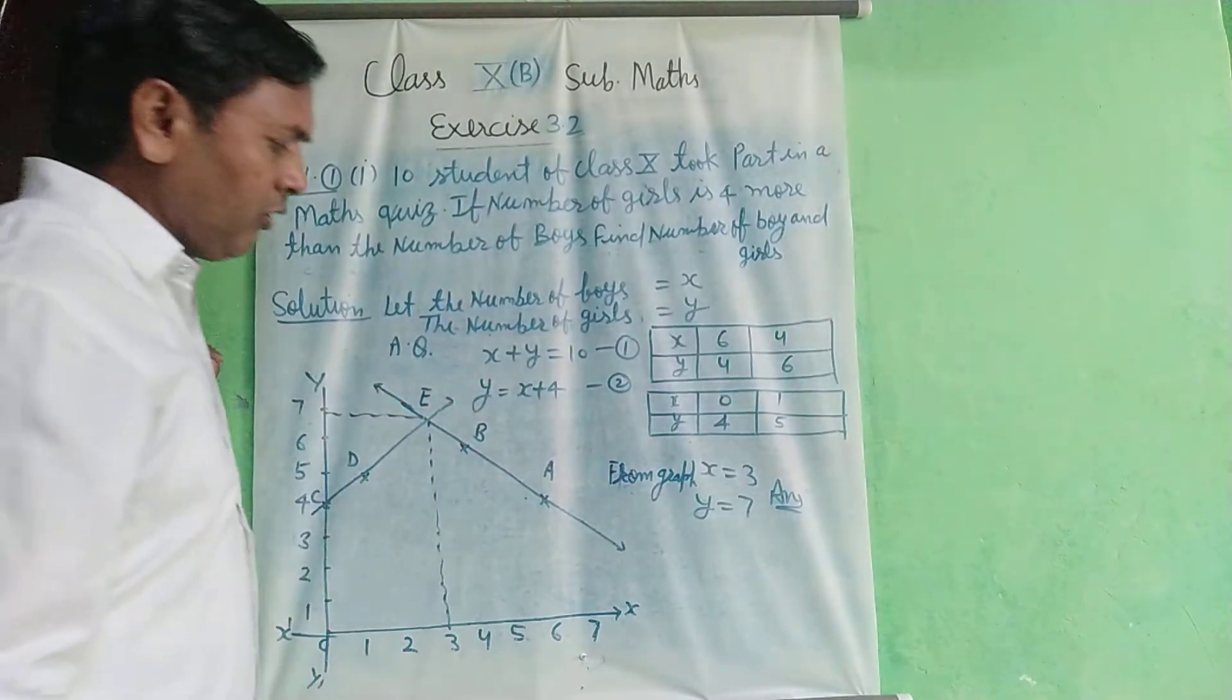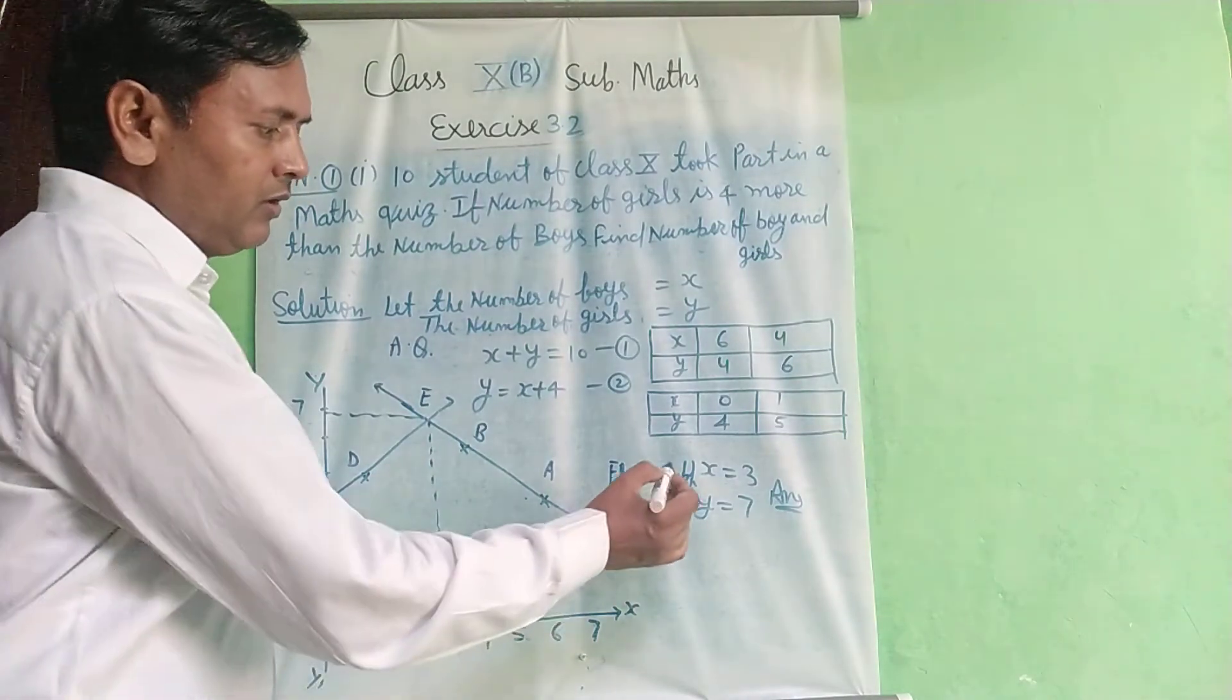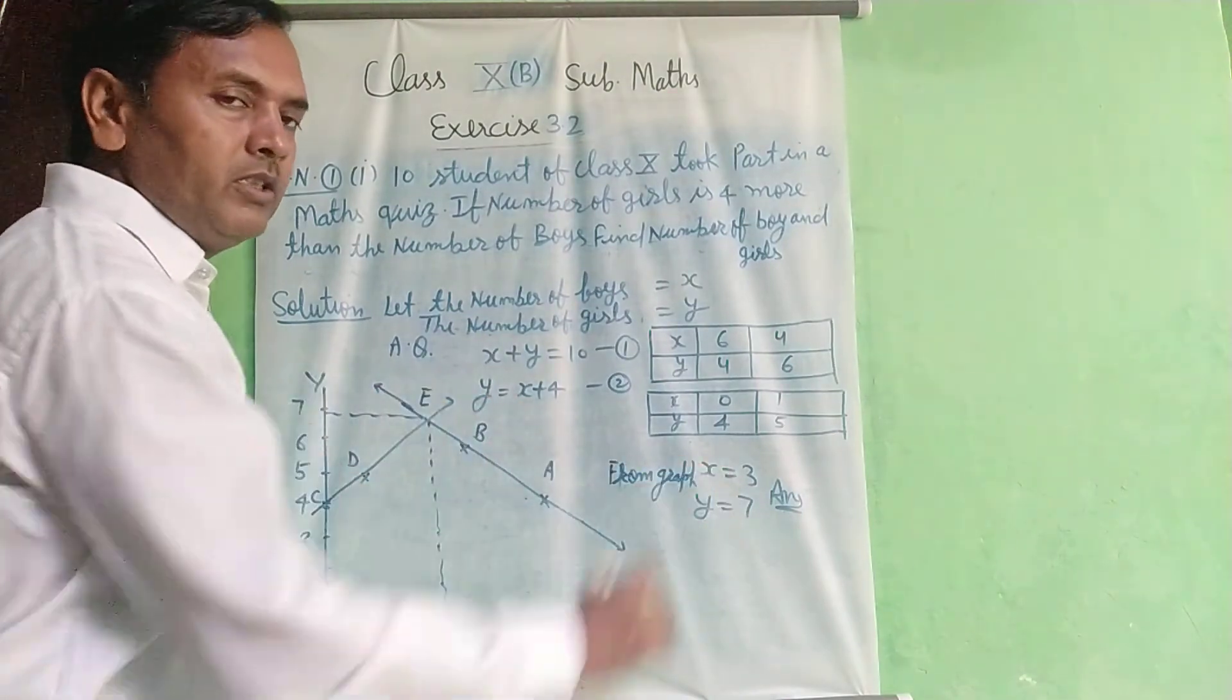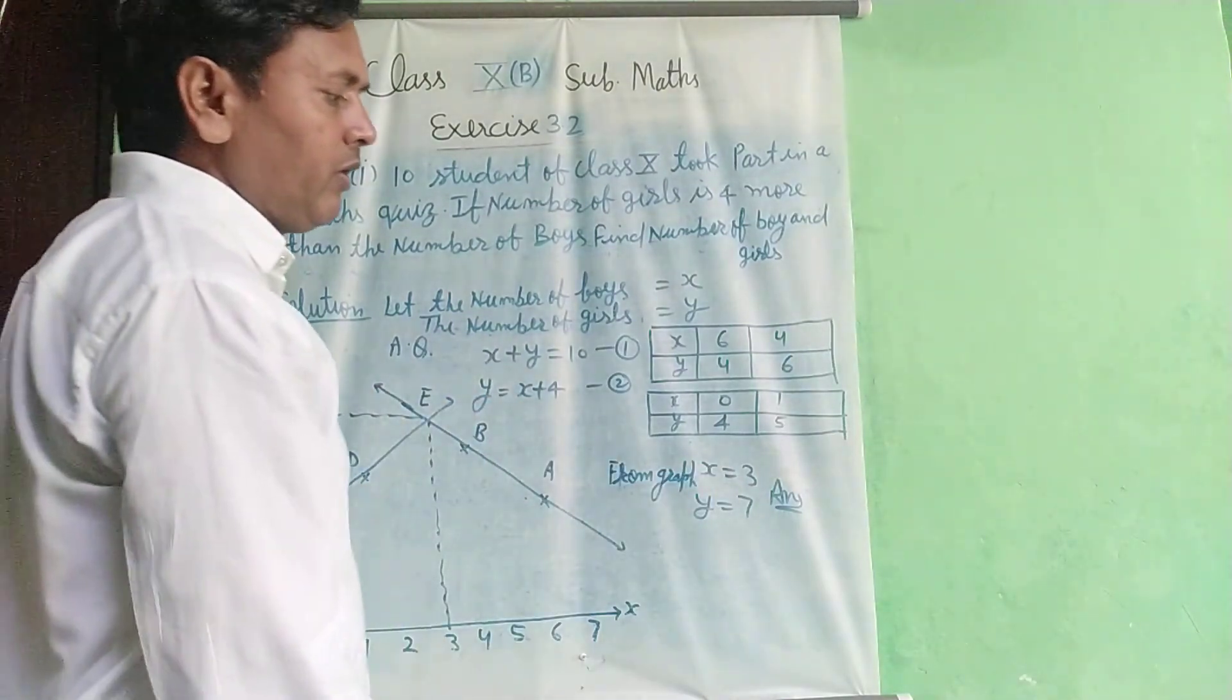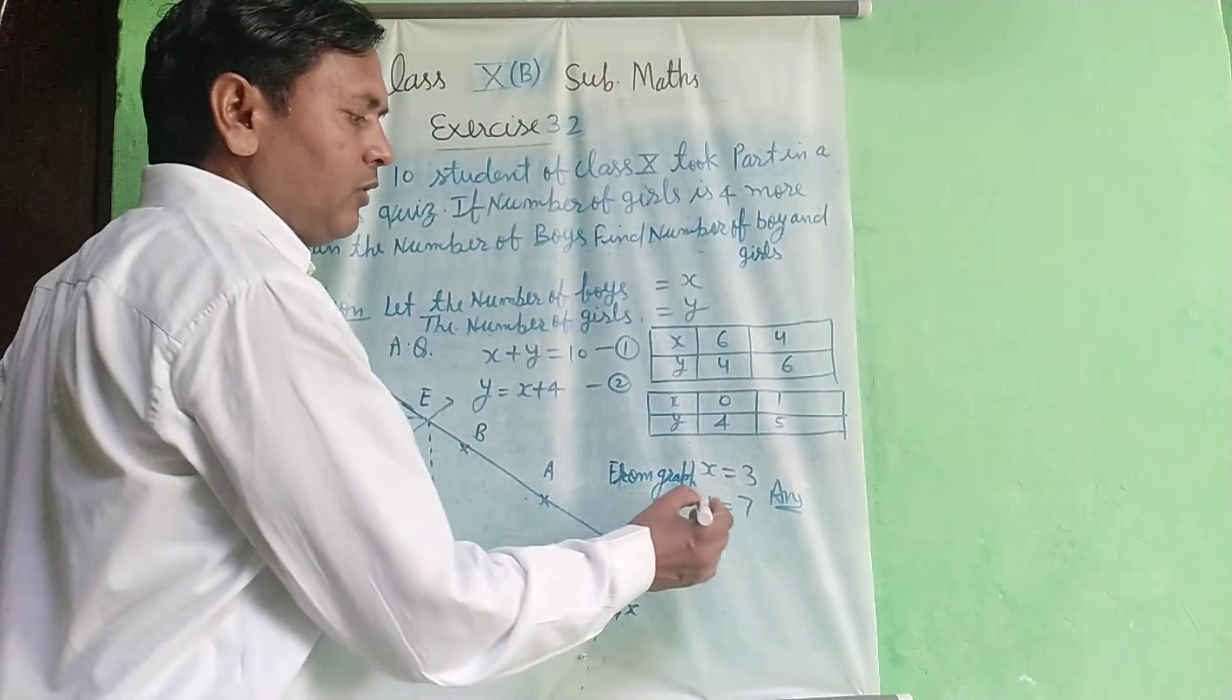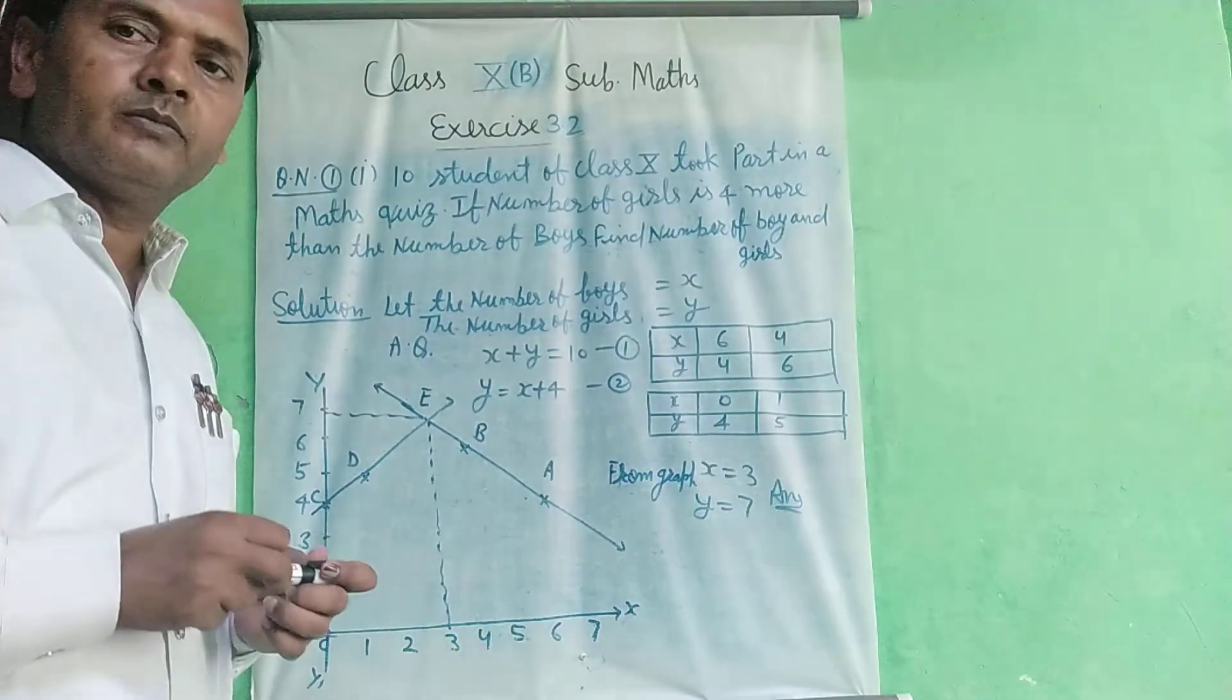So coordinate of E: draw a perpendicular on the axes. From the graph, x is equal to 3, y is equal to 7. So the number of boys is 3 and number of girls is 7, from the graph.